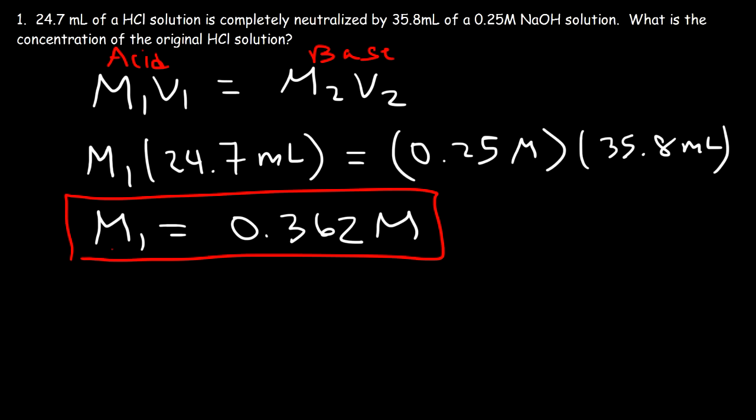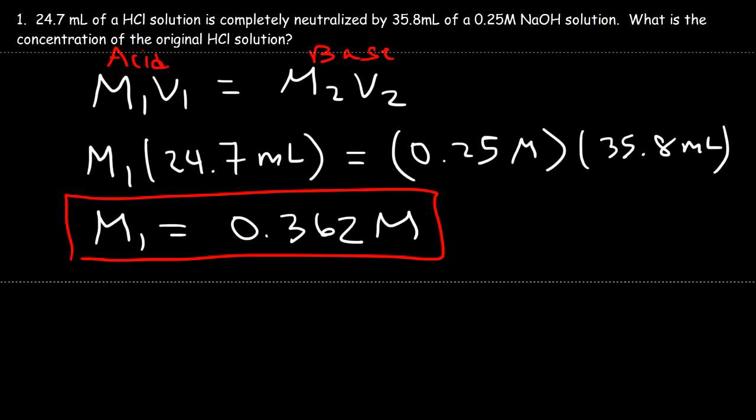Now let's talk about the other method we can use to get the same answer. This is probably the simplest method to use — just using that formula — if you have a monoprotic acid and base. For other cases, we'll need dimensional analysis.